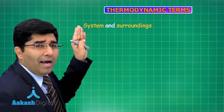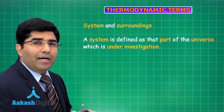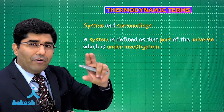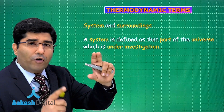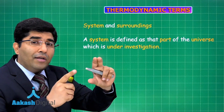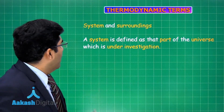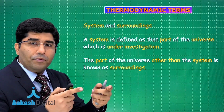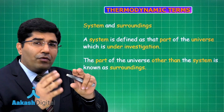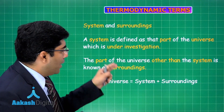The first thermodynamic term is system and surroundings. A system is defined as the part of the universe which is under investigation. For example, in an experiment with a container having some water, that container and water is our system — we talk about heat changes in water. The part of the universe other than the system is called the surroundings. So: universe = system + surroundings.